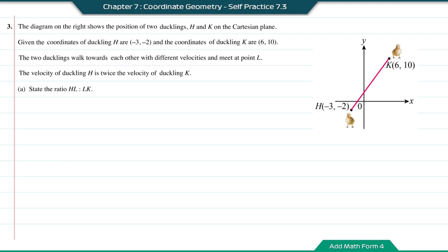As the velocity of duckling H is twice that of K, it means duckling H is moving faster, and the distance covered by duckling H is also going to be twice the distance covered by duckling K. So this means the ratio HL is going to be twice the ratio LK. Therefore, HL will be equal to 2 and LK will be equal to 1.